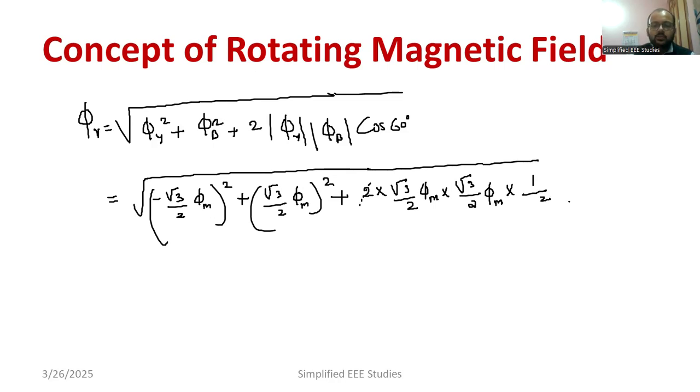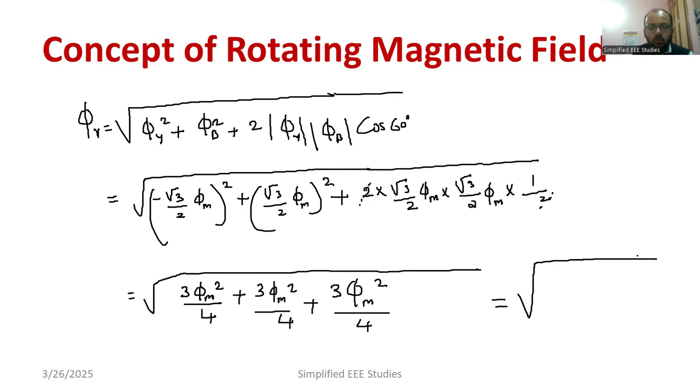So do one thing, kindly do the simplification. These 2 and 2 get cancelled. So remaining square root of 3 Φ_M square, 3 Φ_M square by 4 plus 3 Φ_M square by 4 plus 3 Φ_M square by, so root 3 into root 3, 3 Φ_M square divided by 4, correct. That is nothing but square root of 3 times 3 into Φ_M square divided by 4, 3 into 3 means 9, 9 Φ_M square by 4. This is my Φ_R.